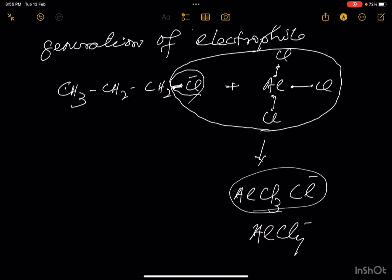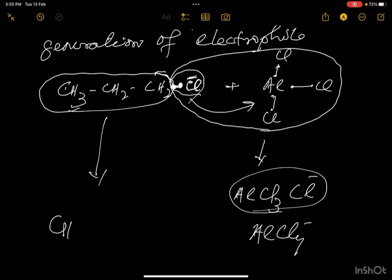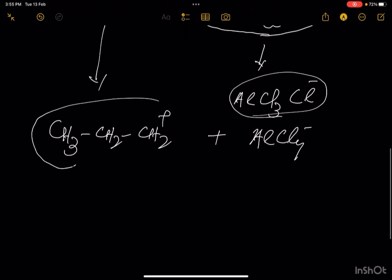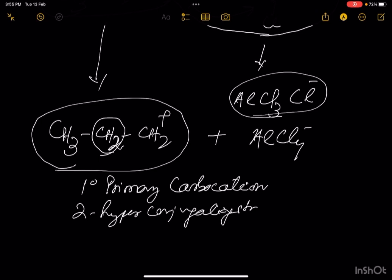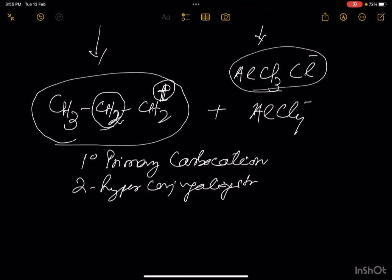As this bond contains 2 electrons and these 2 electrons are taken by AlCl3, this Cl becomes Cl-. This CH2 lost its electron, so CH3-CH2-CH2 becomes CH3-CH2-CH2+. This is a primary carbocation, and it has 2 hyperconjugating structures.